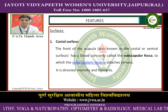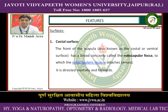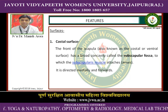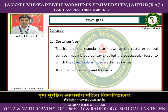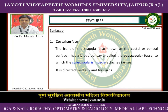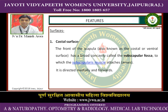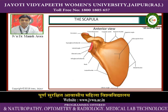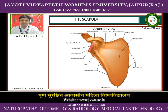Features: The front of the scapula, also known as the costal or ventral surface, has a broad concavity called the subscapular fossa. The subscapularis muscle arises from this surface. It is directed medially and forwards. This is the picture of the scapula, its anterior view, showing its different parts.